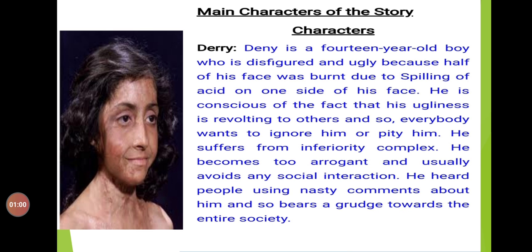Before I start explaining the text, let me introduce the two protagonists — that means the main characters of the story. The first one is a boy named Derry, a 14-year-old who is disfigured because half of his face was burnt due to acid. He is conscious that his ugliness is revolting to others, suffers from inferiority complex, and bears a grudge towards society.